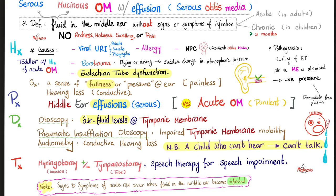An important cause to remember is Eustachian tube dysfunction — anything that causes dysfunction of the Eustachian tube can eventually cause otitis media with effusion. The patient describes the problem as a sense of fullness or pressure in the ear, usually painless because it's not infected. The effusion is not purulent because it's not infected; it could be serous or mucinous, but not purulent.